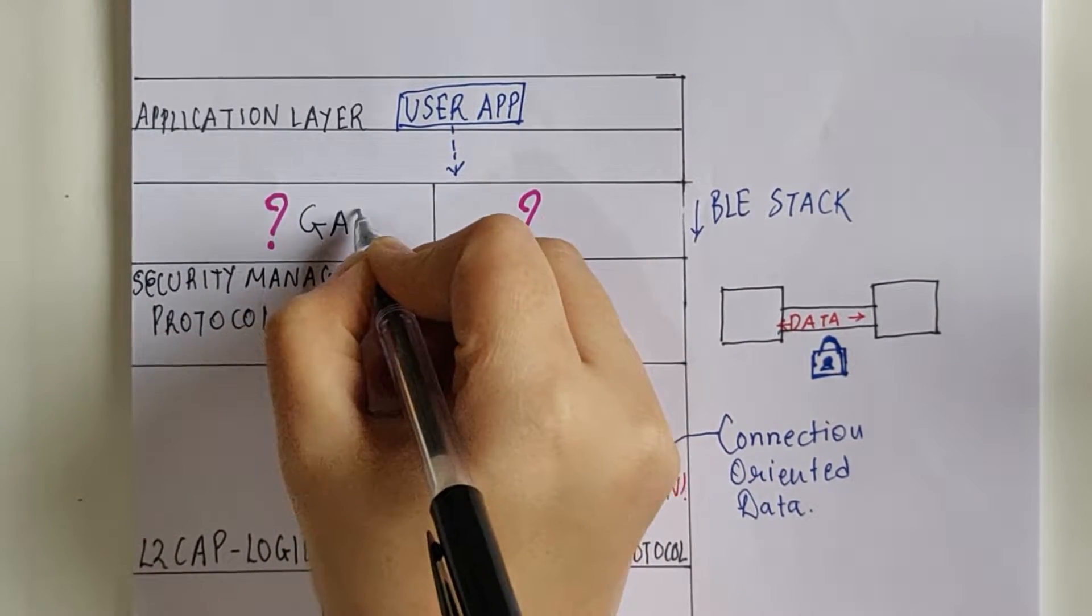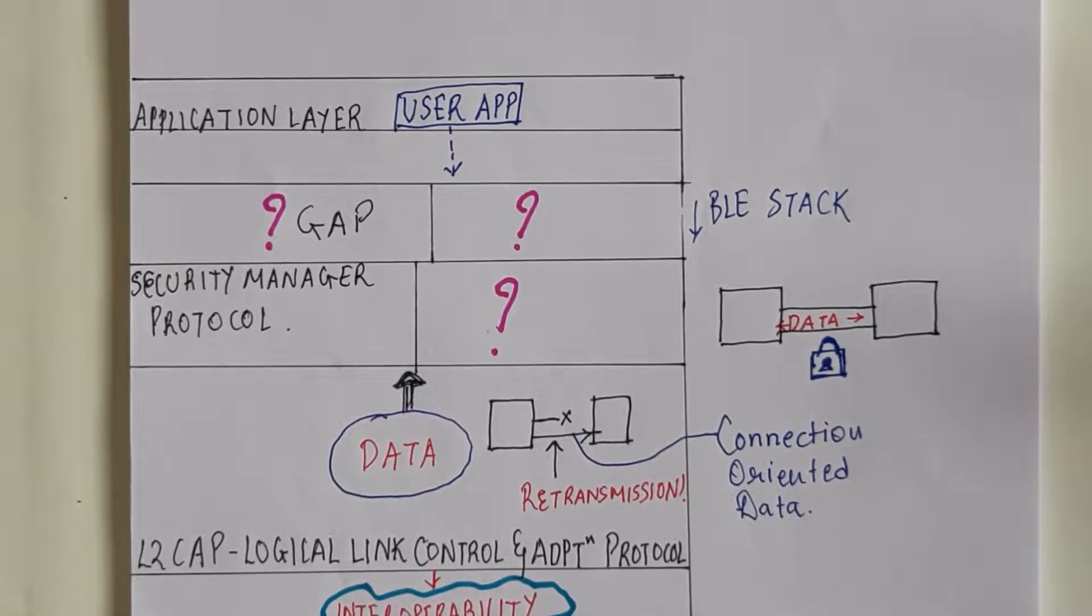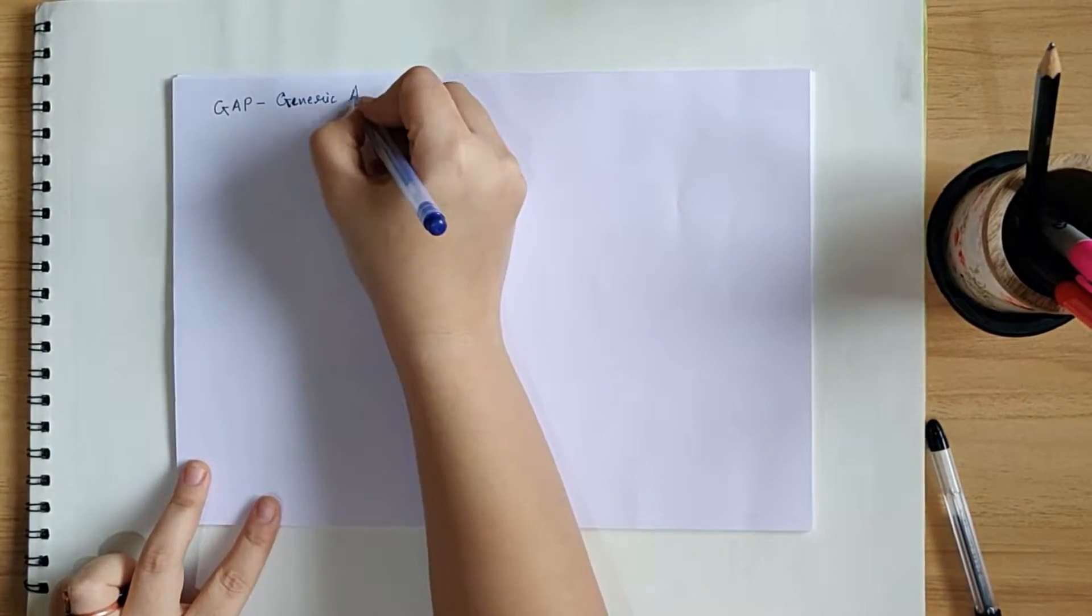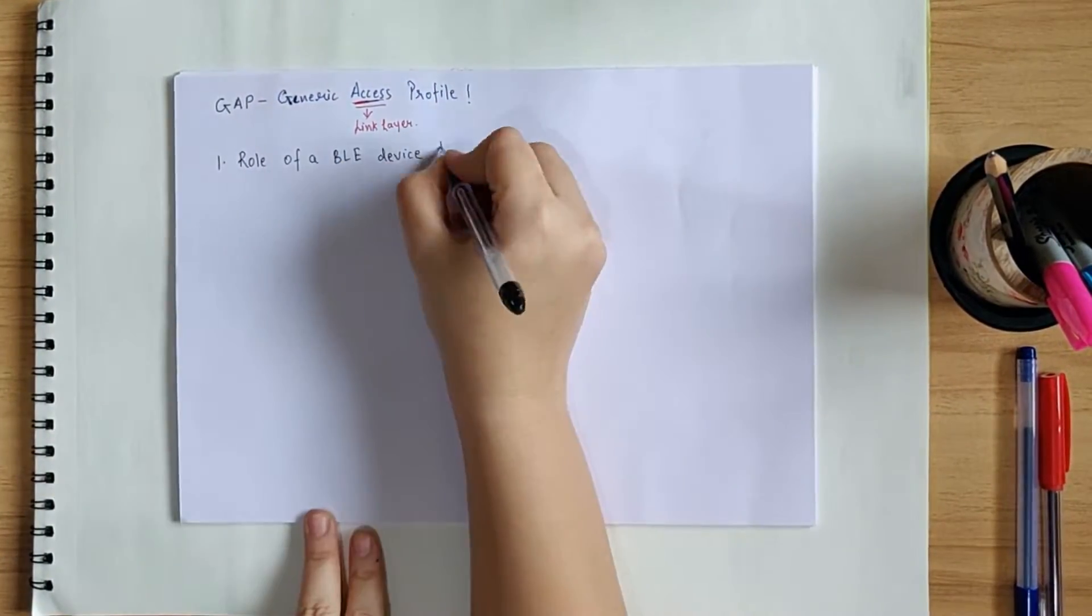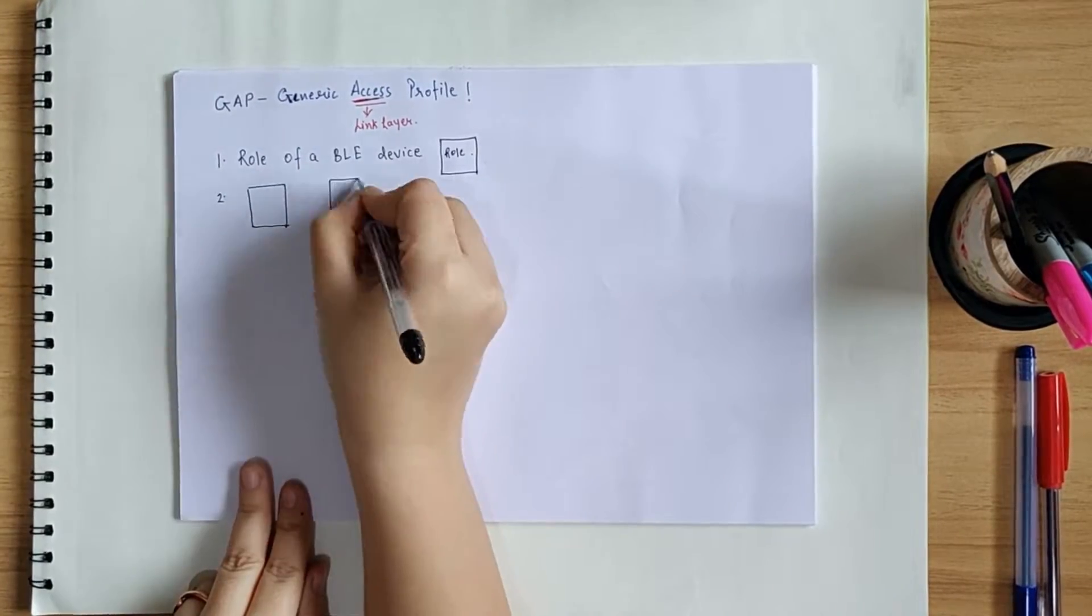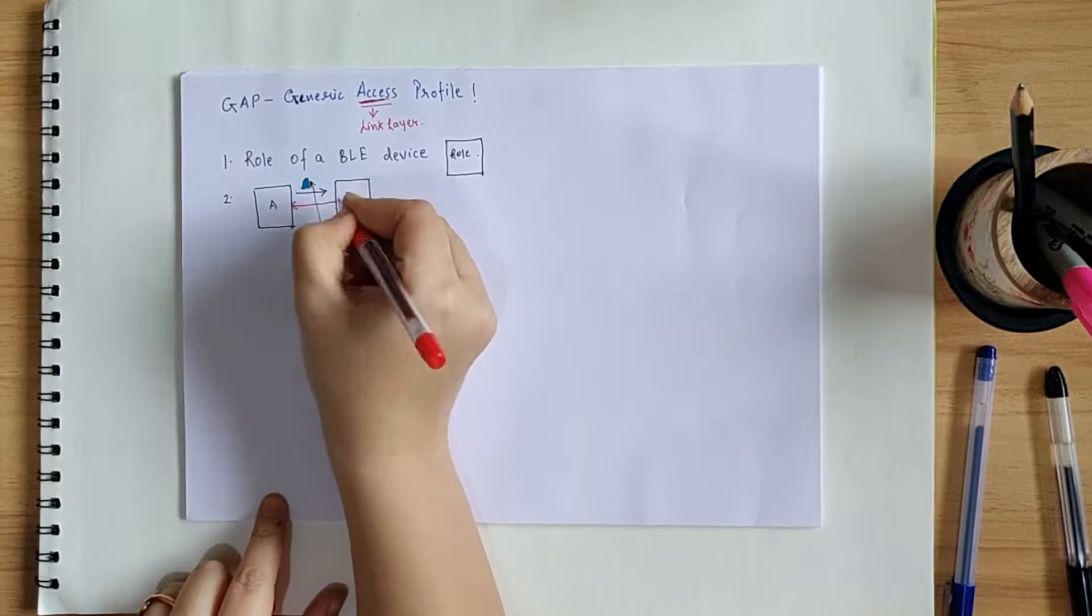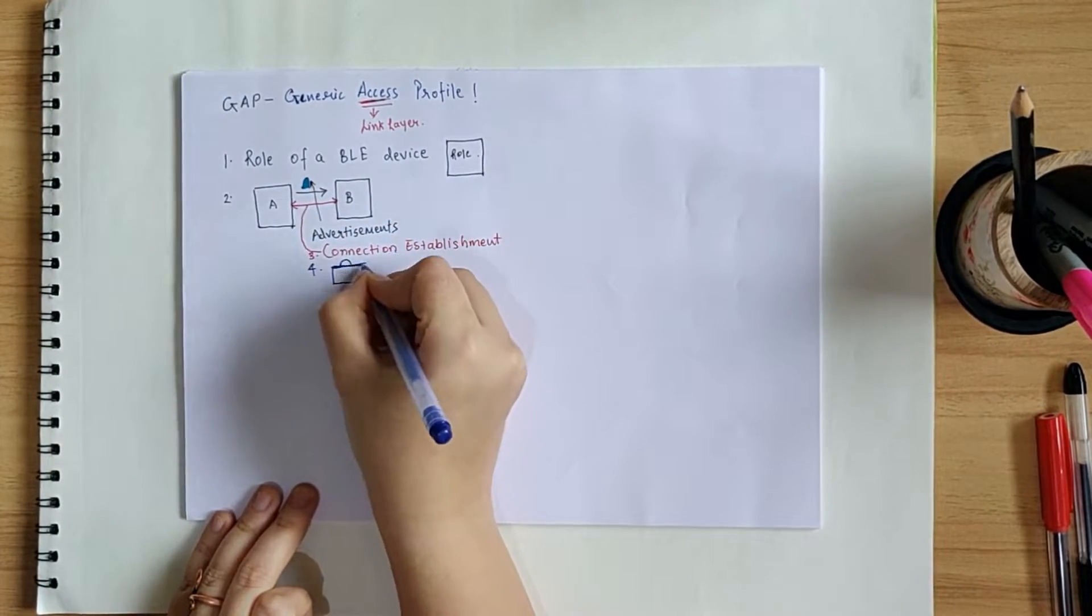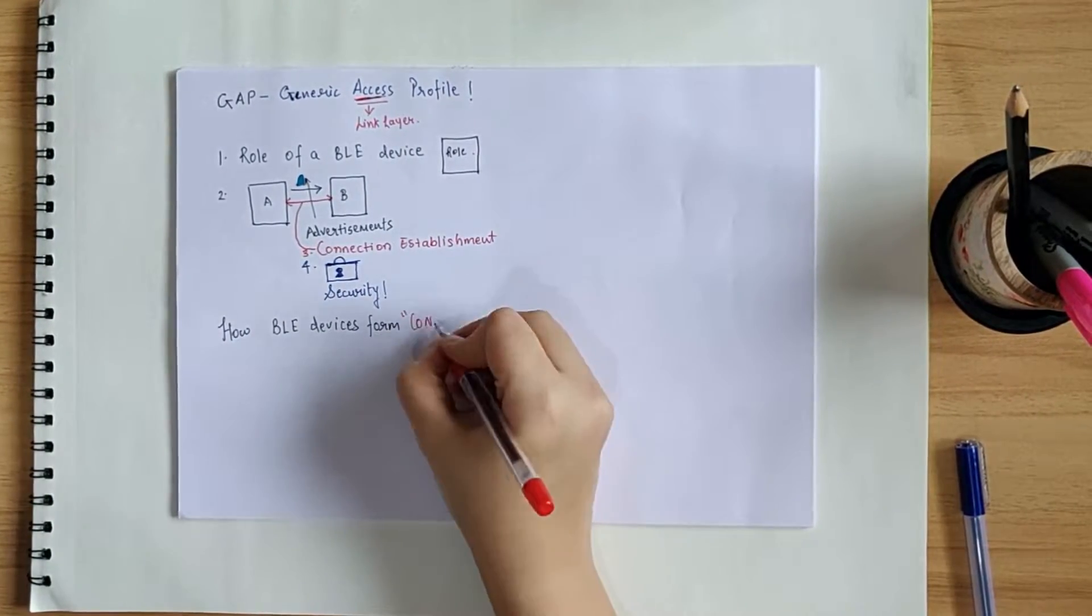Alright, let's fill the first box. First box is nothing but GAP and GAP stands for Generic Access Profile. And as implied by its name, it provides access to the link layer operations. This includes defining the role of a BLE device, managing advertisements, connection establishment, and security. Basically, everything to do with how BLE devices form connections with each other.